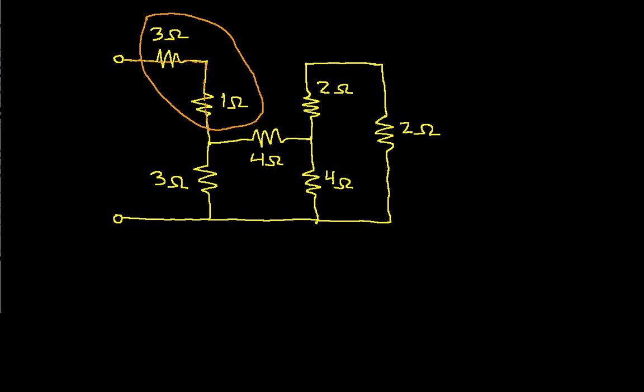We know that the equivalent resistance of two resistors in series is just the sum of their resistances. So we can say that the equivalent resistance of this is going to be 4 ohms, or the sum of 3 ohms and 1 ohm. So that's one combination that we can make to simplify things.